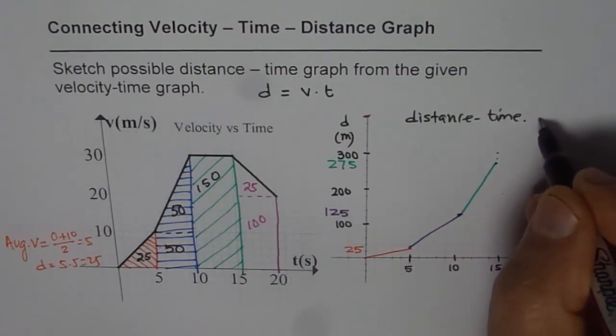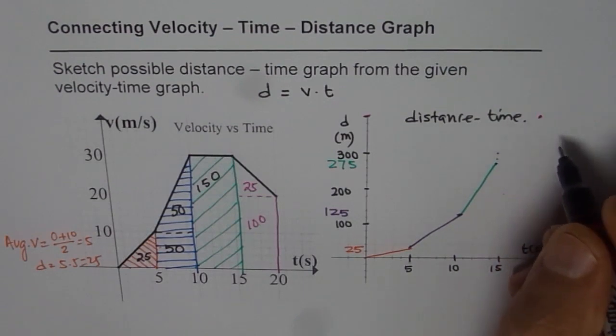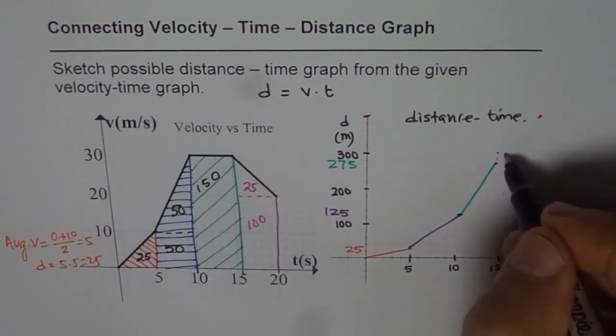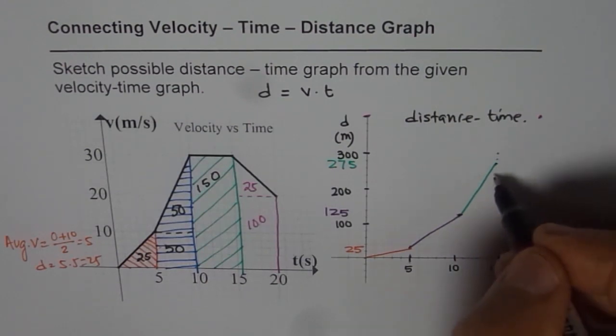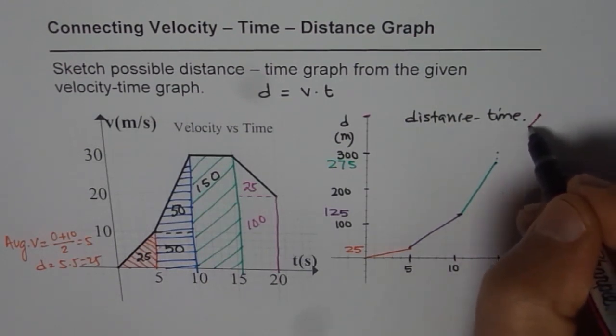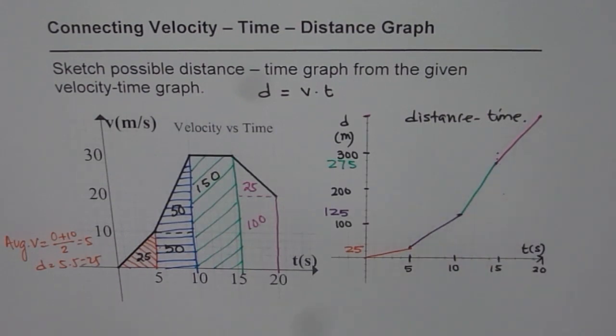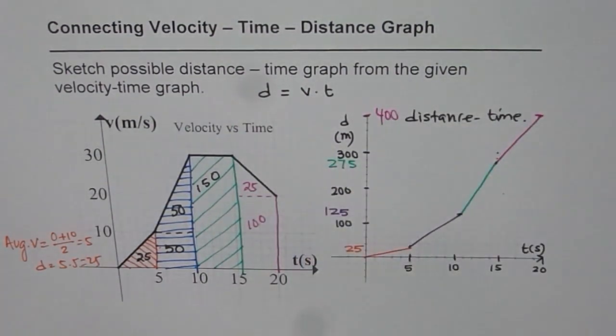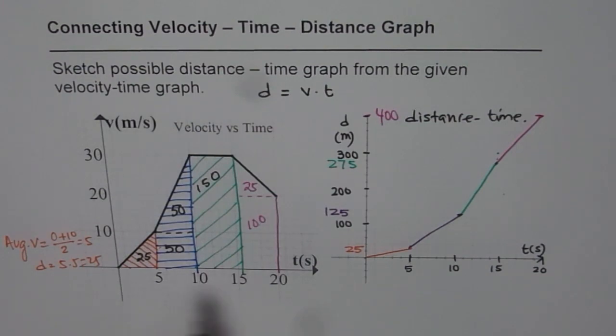So at 20, which is kind of here, let me just join this. So distance will be 400. So that point seems to be at 15, so this will be 400. Do you see that? So this point is at 400, 400 meters in 20 seconds. So that is how you get distance time graph.